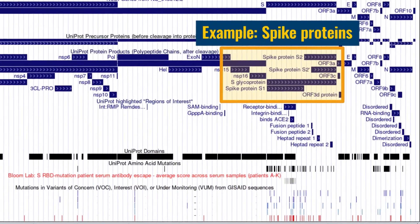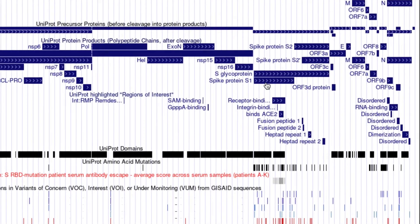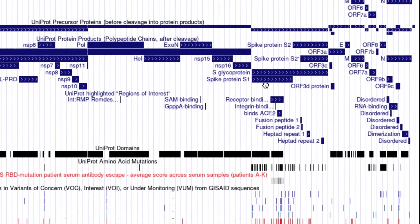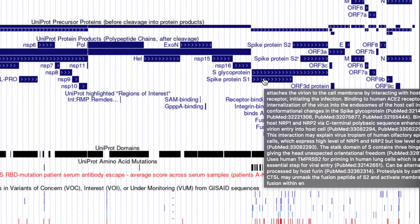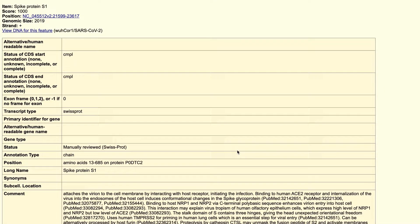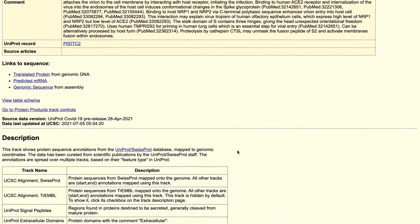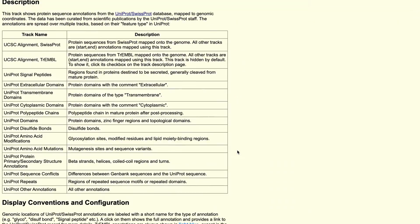If you hover over an item, you will see a descriptive name. Clicking on the item takes you to a details page, which gives you even more information, including a reference to the source article in the literature.